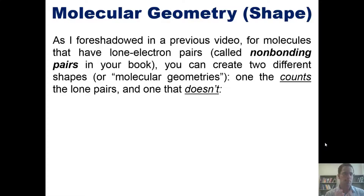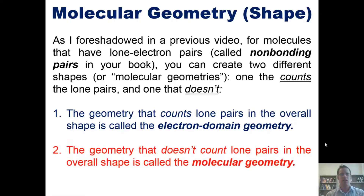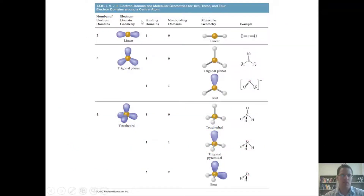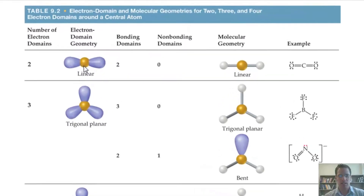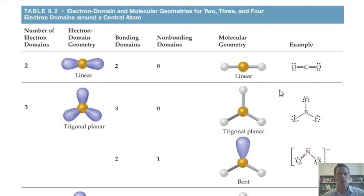For molecules that have lone electron pairs (non-bonding pairs), you can describe two different shapes. The geometry that counts lone pairs in the overall shape is called electron domain geometry. The geometry that doesn't count lone pairs is called molecular geometry. For example, a central atom bonded to two atoms with no lone pairs has two bonding domains, zero non-bonding domains, and linear molecular geometry — like carbon dioxide.